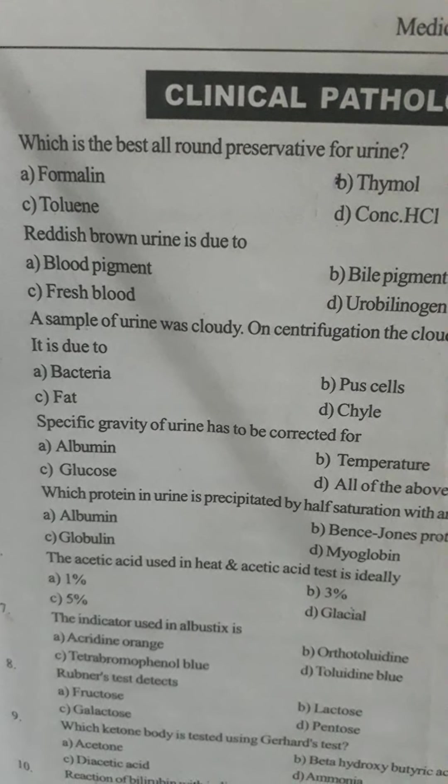Question number nine: which ketone body is tested in urine by Gerhardt's test? Option A: acetone, Option B: beta-hydroxybutyric acid, Option C: diacetic acid, Option D: ammonia. The correct answer is Option C, diacetic acid.